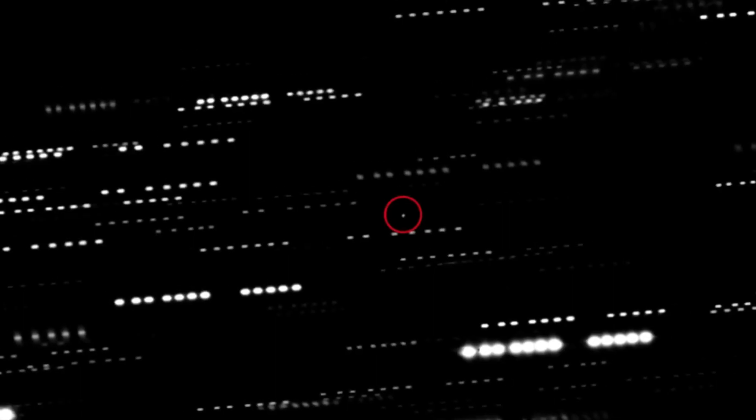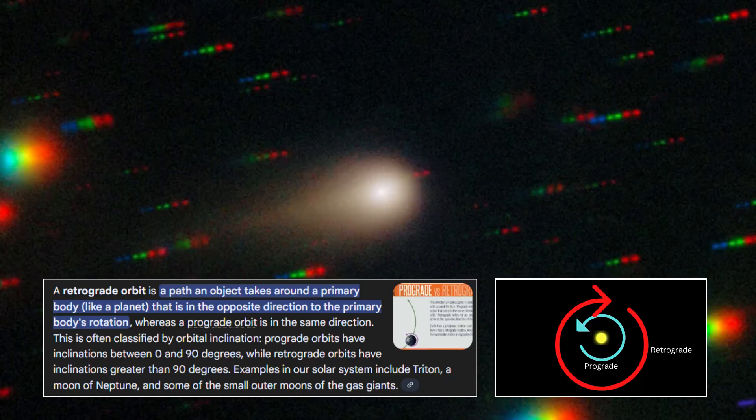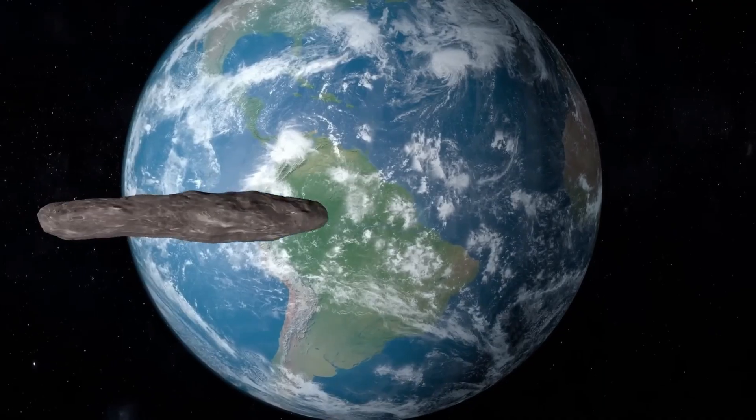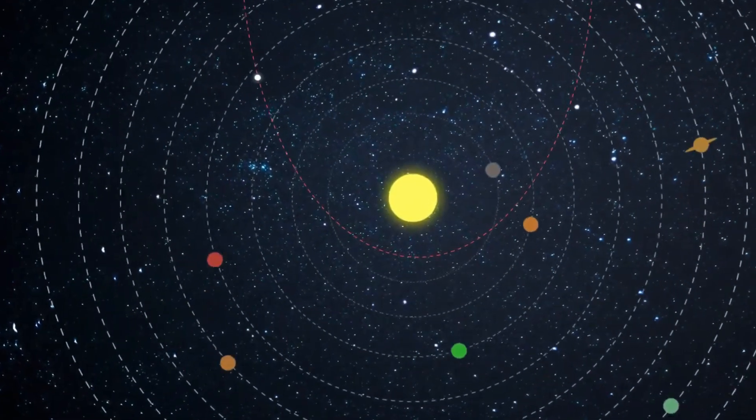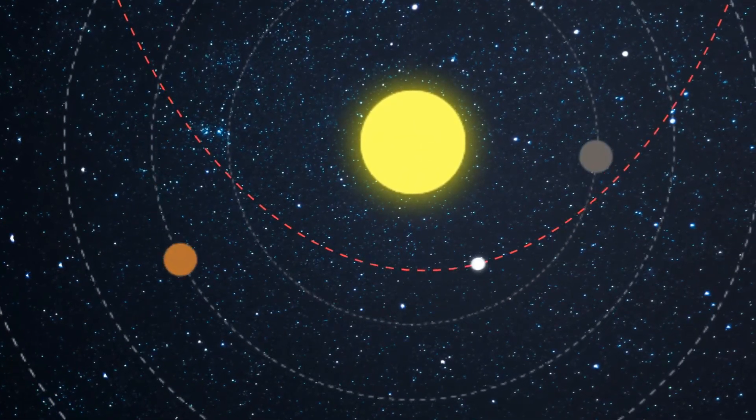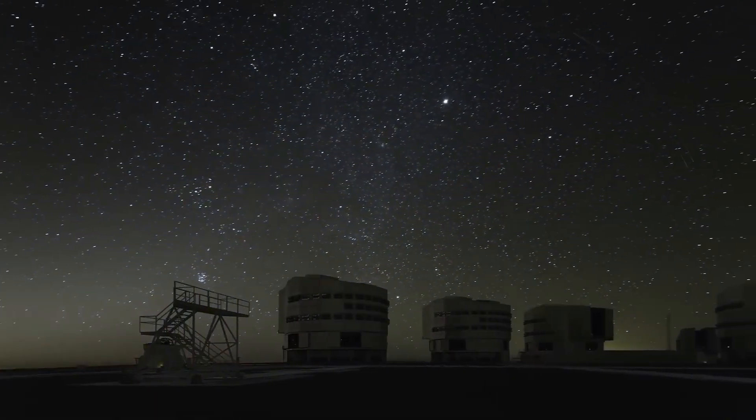The trajectory evidence builds an increasingly compelling case for something unusual. 3i Atlas is traveling on what's called a retrograde orbit. It's moving in the opposite direction to most objects in our solar system. Its orbital plane is tilted only about 3 degrees from the ecliptic, that's the flat plane where Earth and most planets orbit around the Sun. The probability of this alignment happening by random chance? About 0.2%.